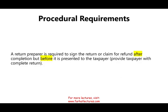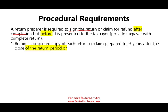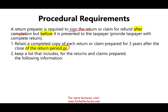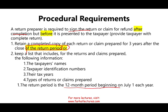Other procedural requirements: tax preparers must sign the return after its completion but before it is presented to the taxpayer. You must also retain records for three years. If you don't keep the return itself, you must keep a list that includes the taxpayer's name, taxpayer identification number, their tax year, and the type of return or claim prepared. The return period is a 12-month period beginning July 1st each year — you count three years from that July 1st.